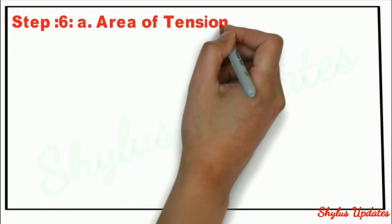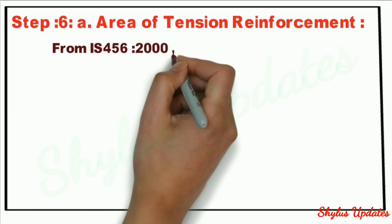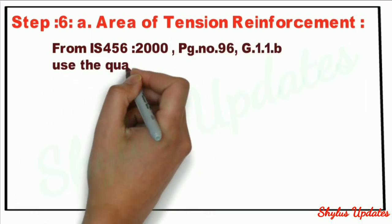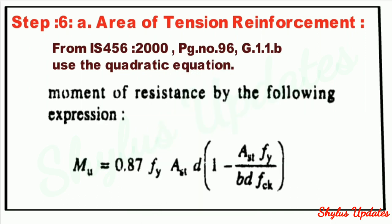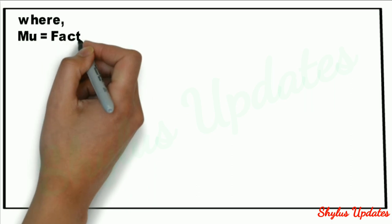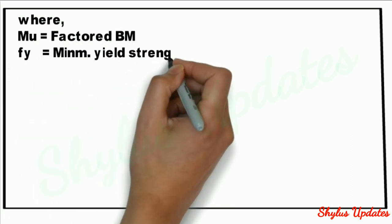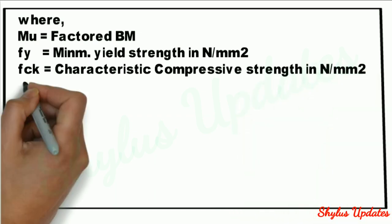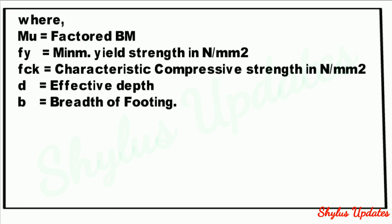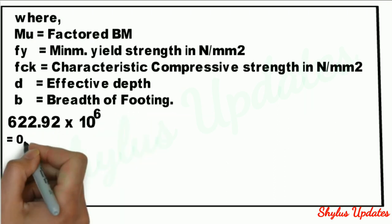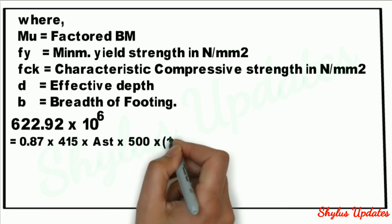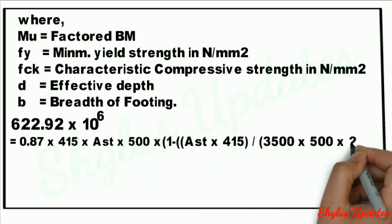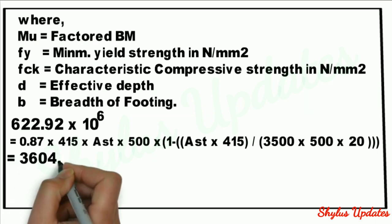Step 6: Area of tension reinforcement. From IS 456-2000 page number 96, clause G-1.1(b), use the quadratic equation: MU = 0.87 × Fy × AST × d × [1 − (AST × Fy) / (B × D × FCK)]. Where MU is the factored bending moment, Fy is the minimum yield strength in N/mm², FCK is the characteristic compressive strength in N/mm², D is the effective depth, and B is the breadth of footing. Substituting all values, we get AST = 3604.62 mm².